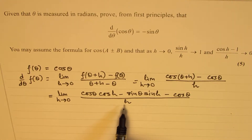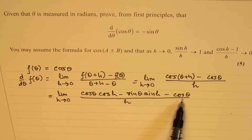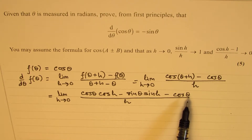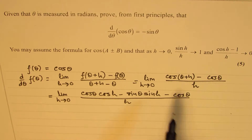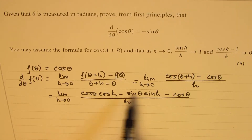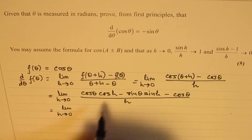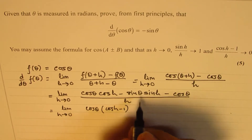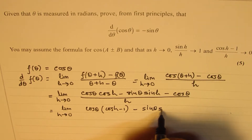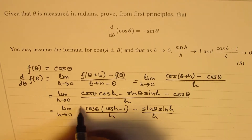Now we'll use the properties of limit. You will notice that cos θ is independent of h. So we can combine these terms — taking cos θ as a common factor from the first and third terms. So we get: limit h approaches 0 of [cos θ · (cos h minus 1) minus sin θ · sin h], all over h, where the limit applies to both parts.